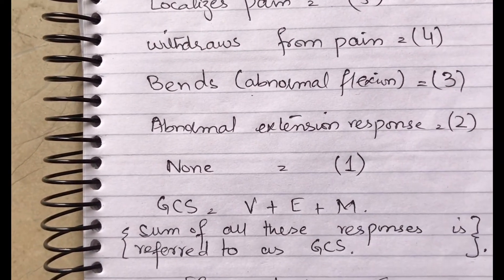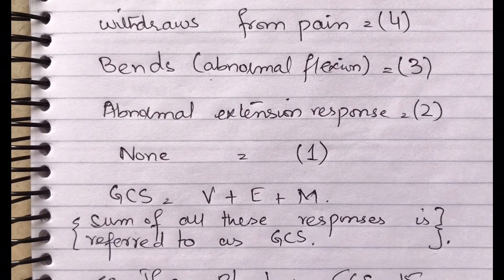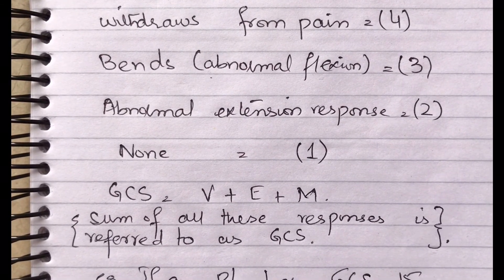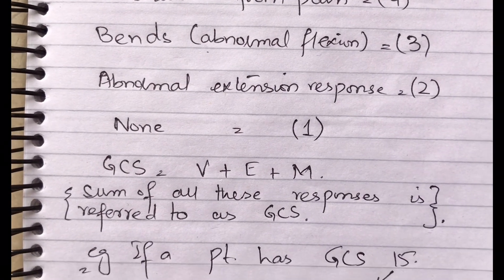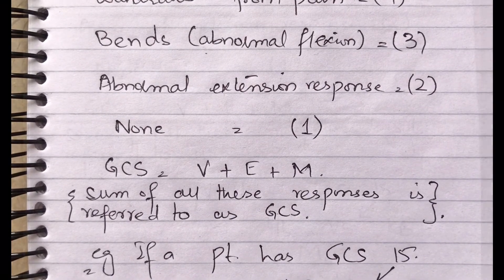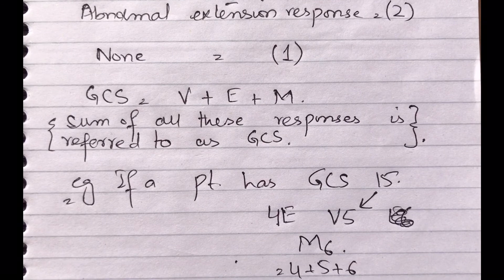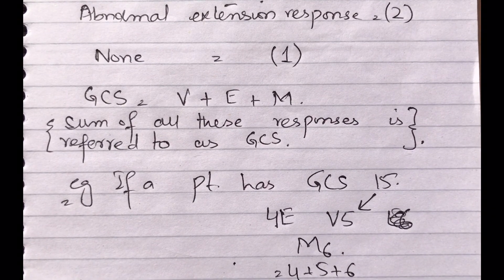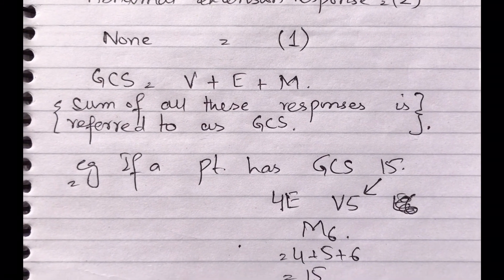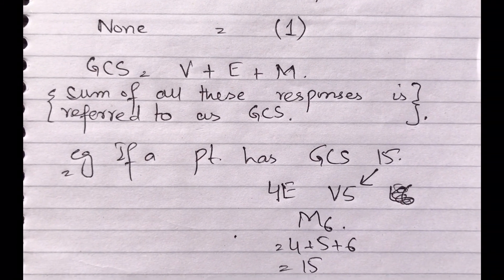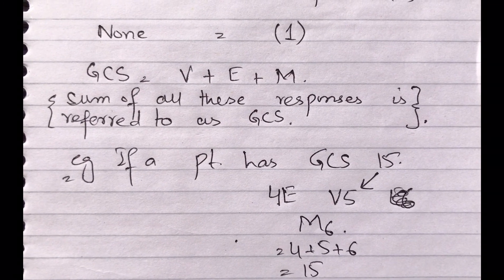We don't measure GCS individually — we always take the sum of the verbal response, eye-opening response, and motor response. For example, if a patient has a GCS of 15, it means eye-opening is 4, verbal response is 5, and motor response is 6. Adding them together: 4 plus 5 plus 6 equals 15. That is the mnemonic for GCS.